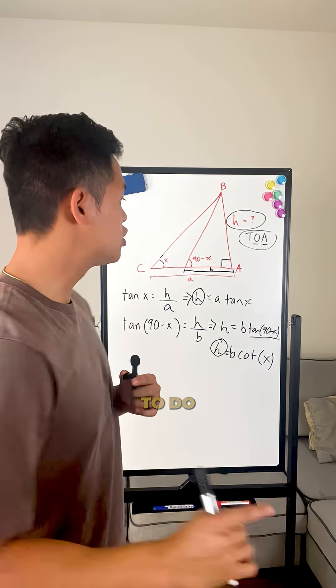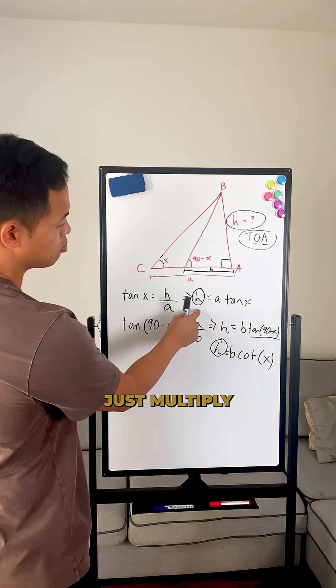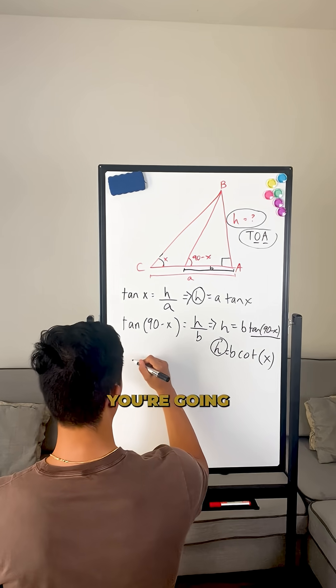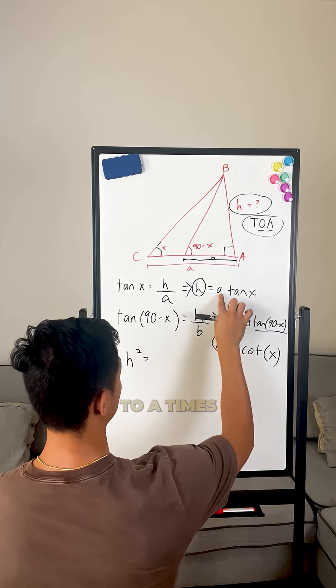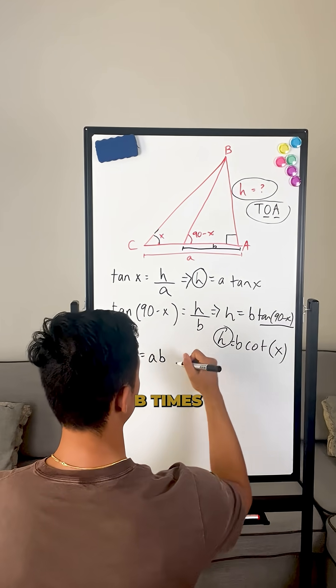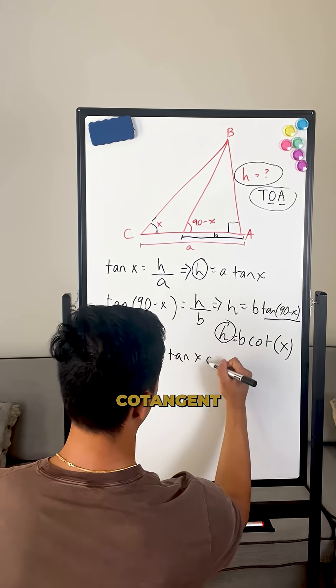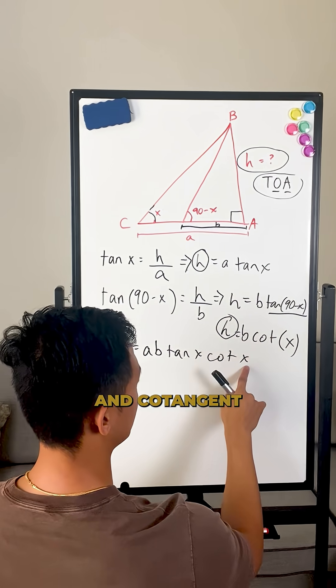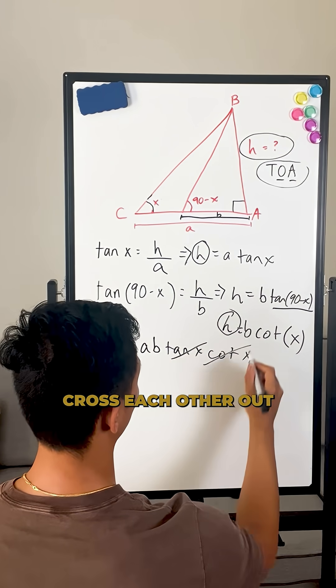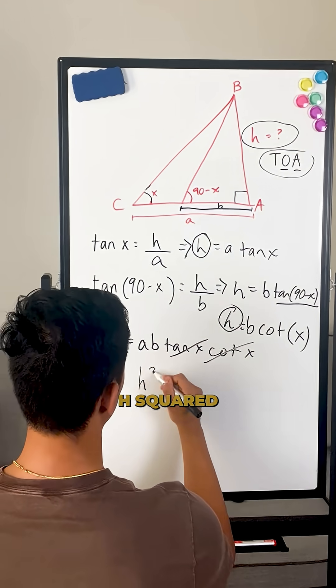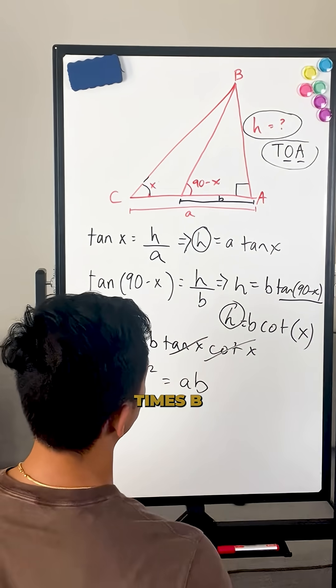So now all you need to do to solve for H is just multiply the first equation by that second equation. You're going to have H squared equals A times B times tangent of X times cotangent of X. Now tangent and cotangent of X, they just cross each other out. So now we just have H squared equals A times B.